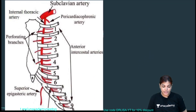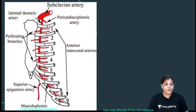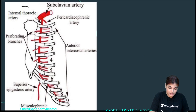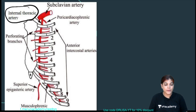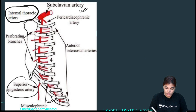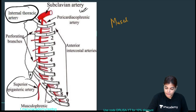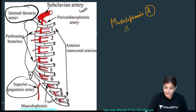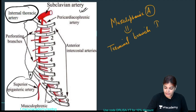Looking at the diagram, this is the internal thoracic artery, which is a branch of the subclavian artery. The two terminal branches of the internal thoracic artery are: (1) superior epigastric artery and (2) musculophrenic artery. So the MCQ is about the musculophrenic artery, which is one of the terminal branches of the internal thoracic artery.